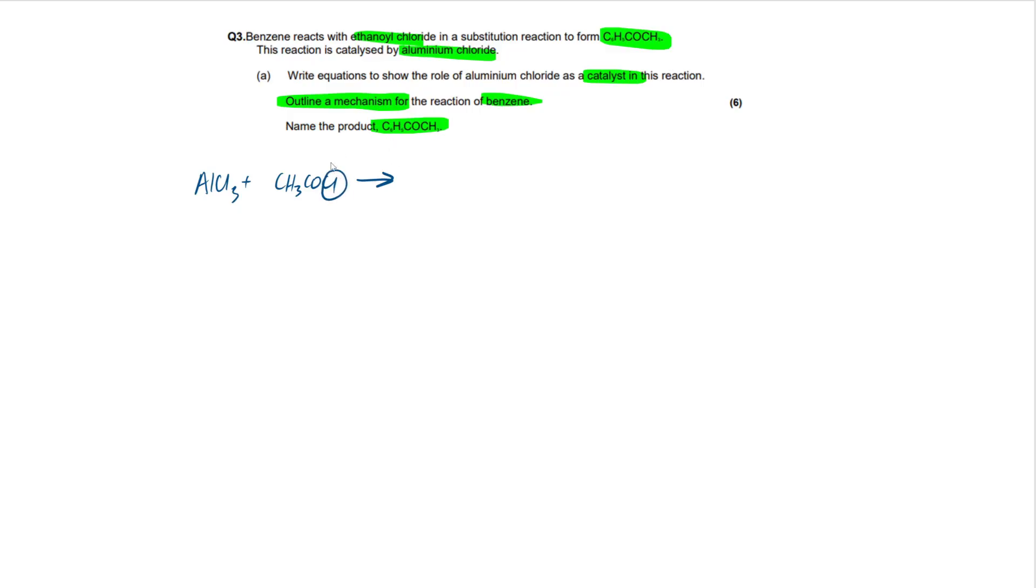So what's this going to produce us then? So one of the chloride ions, this guy right here, is going to be donated onto this. So we're going to have AlCl4 minus because it's gained a negative charge from the chloride ion, plus CH3CO plus. So this is the formation of our electrophile.